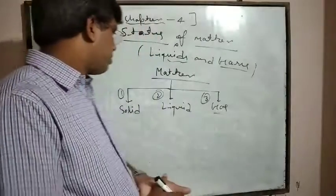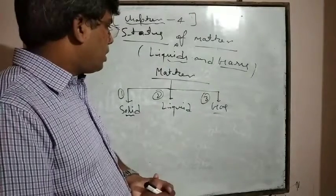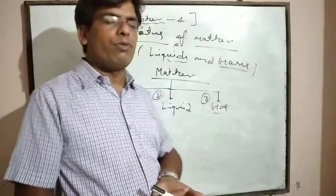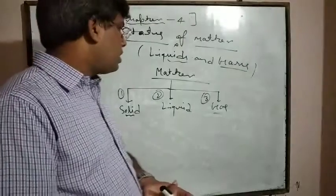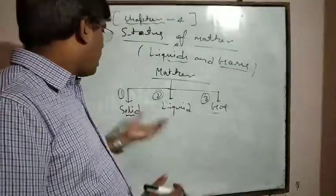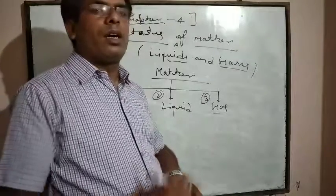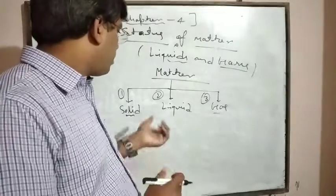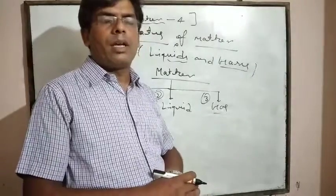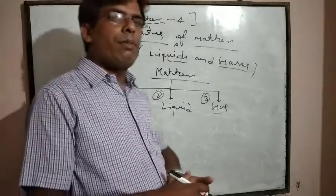Whereas in liquid substances, the intermolecular attractive force is less than in solids, and intermolecular distance is comparatively higher than in solids. In liquids, density is less than solids. Liquids have flow-type characteristics and have no fixed shape but have a fixed volume.